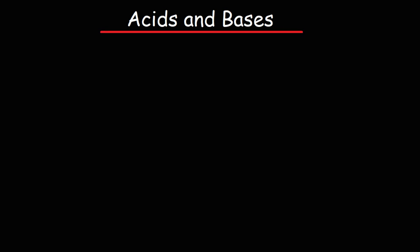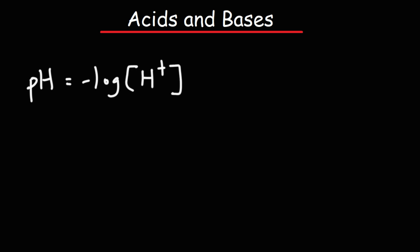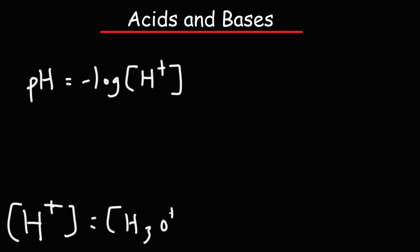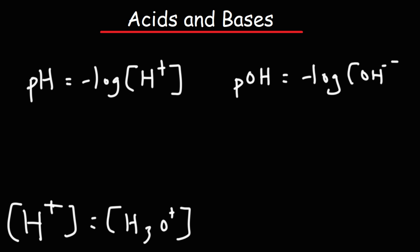In today's lesson I want to go over a list of formulas and equations associated with acids and bases. If you know the H+ concentration, you can calculate the pH using this formula: it's the negative log of the hydrogen ion concentration. In water, the concentration of H+ is the same as the concentration of the hydronium ion. It's also important to know that the pOH is equal to the negative log of the hydroxide concentration.